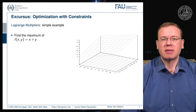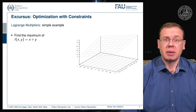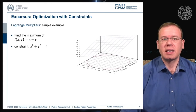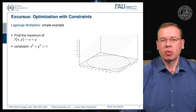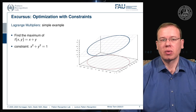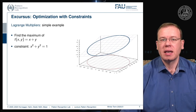Maximizing x plus y is trivially solved at infinity, but that is not useful. So we work with a constraint: x squared plus y squared equals one, meaning solutions must lie on the circle shown in the plot. We now have to bring the constraint and our maximization together — mapping our circle onto our solution space — and the feasible set is indicated with the deformed circle. Our solutions must lie on that particular circle to fulfill the constraint.